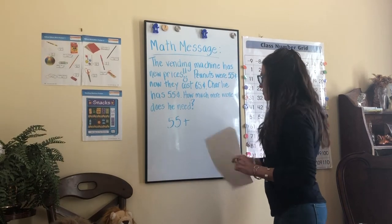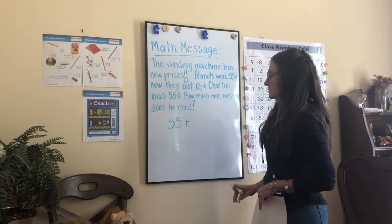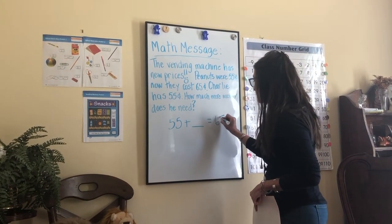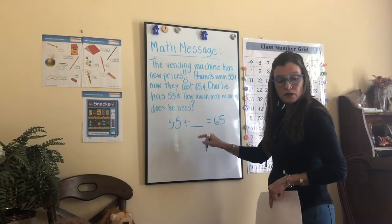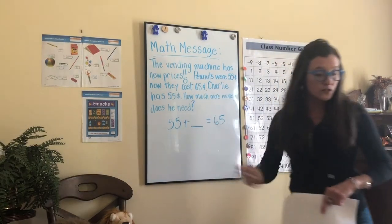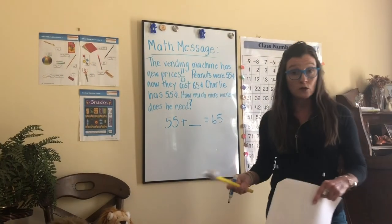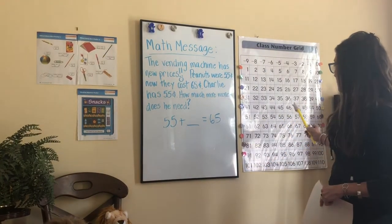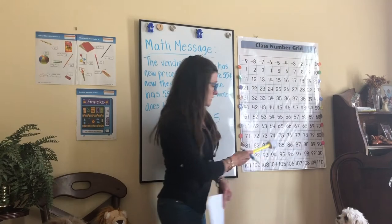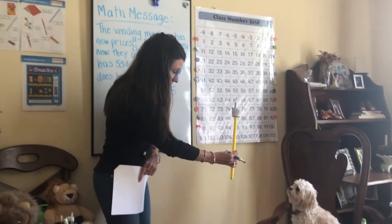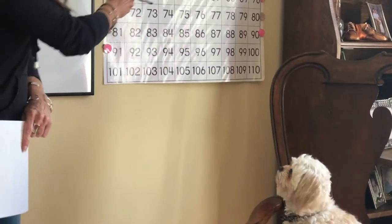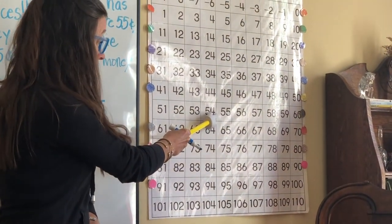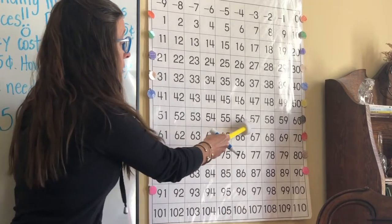So he has 55 cents, and we know he needs 65 cents. All right, so this is the information that we're missing right here in the middle. You can get on the number grid. Some of you I know might know this in your head. We've talked a lot about 10 more or 10 less. So we get over here, get out of your way. Do you want to do it? Okay, I'll do it.